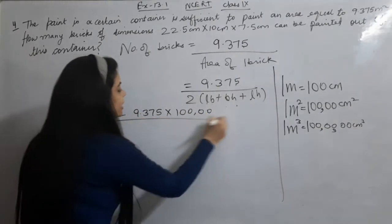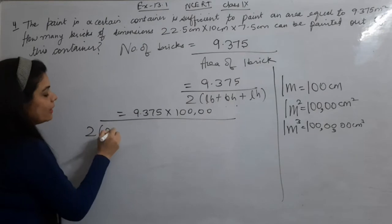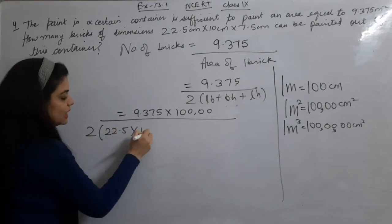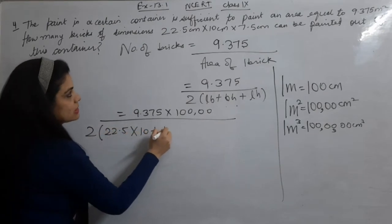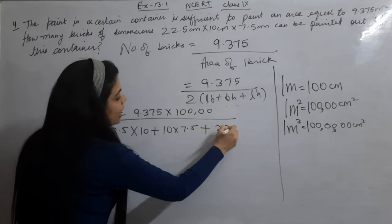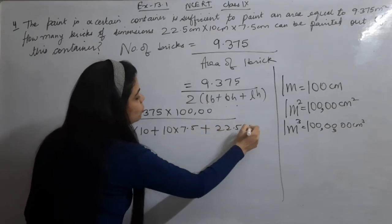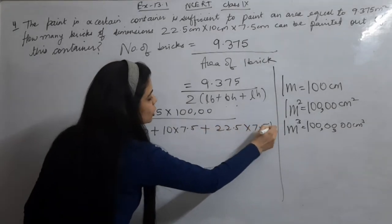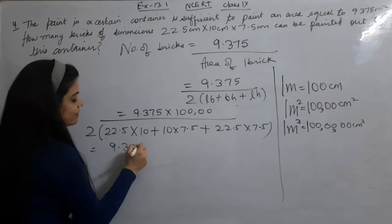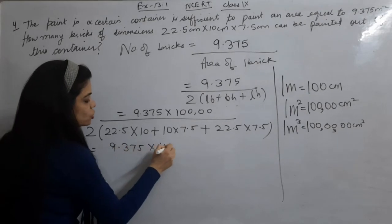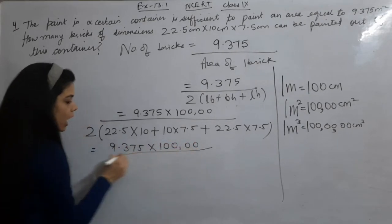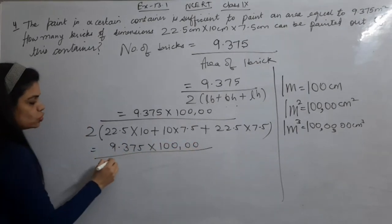Now we calculate: 2 into L — 22.5 — into B, plus B into H, plus L into H. So it is 9.375 into 10,000 on top, upon 2 into the bracket, to get the total surface area of one brick in centimeter square.